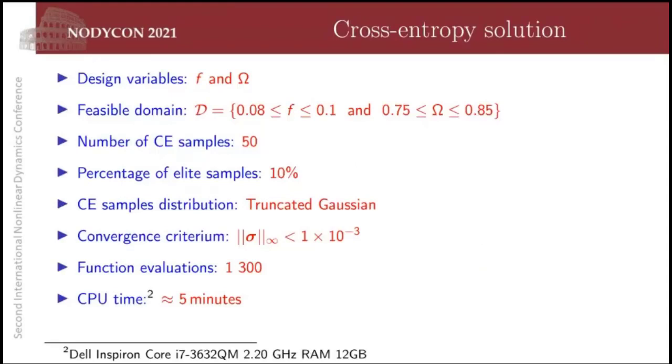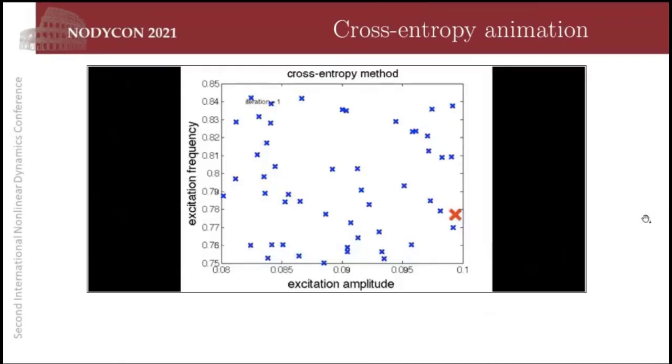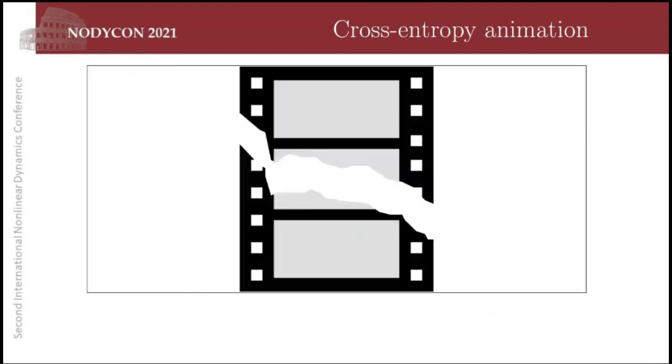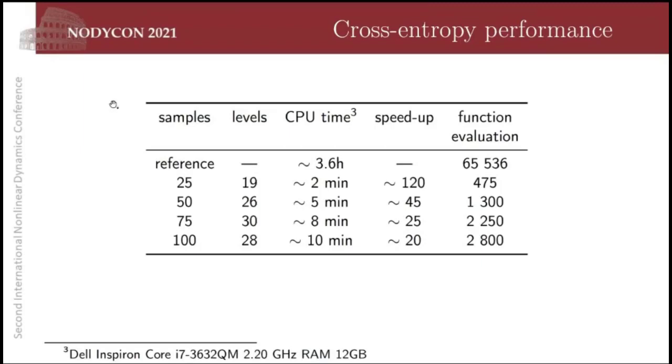Let's see the same problem. Let's attack the same problem now by using cross-entropy method sampling the domain with 50 points and consider 10% of them to update the elite set. We are going to use a truncated Gaussian distribution. The same problem took only 1,300 function evaluations. We solved this in five minutes. In this video, you can see a comparison where the red cross corresponds to the reference solution by brute force. And you can see the metaheuristic points in blue going in the right direction, with a much smaller computational cost. You can see in this table comparison of the cost. The reference solution took almost four hours while with cross-entropy, we are able to solve this problem in a few minutes with speed-ups of up to 120.